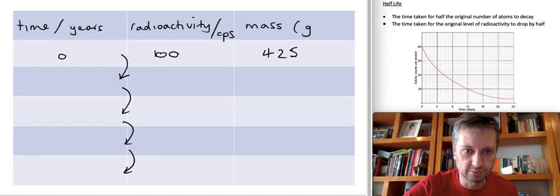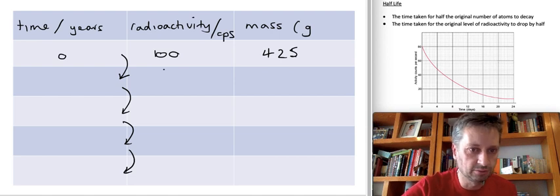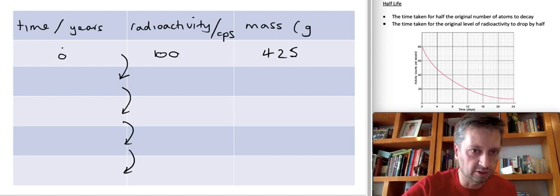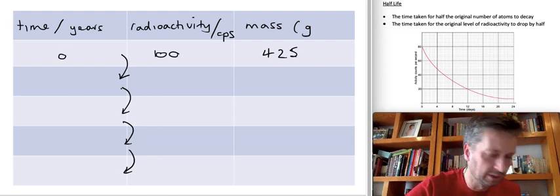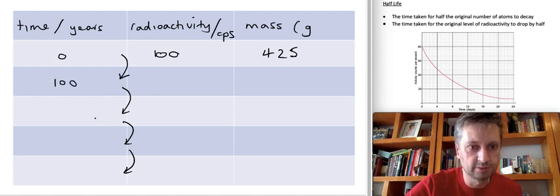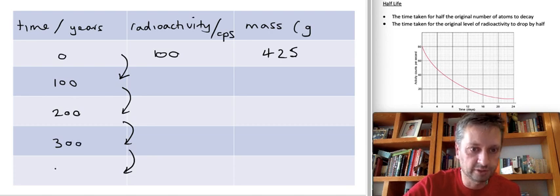I can't imagine any question on the IGCSE will ask you to do more than, well, here we've got one, two, three, four half-lives, maybe five half-lives at a push. Let's do four half-lives. So in our first half-life, we go from zero time, and let's say my element of smithium, to make it simple, let's say it's got a half-life of 100 years. So one half-life will happen after 100 years. Second half-life obviously will happen after 200 years. Third half-life will take 300 years. And the fourth life will happen after 400 years.